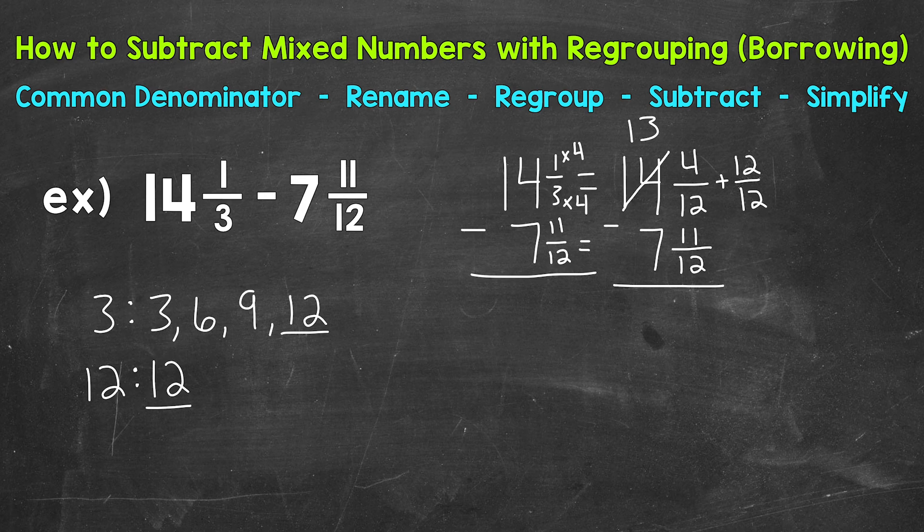12 over 12, if you have the same number on the top and bottom, same numerator and denominator, that equals one whole. Now I chose 12/12 so we would have a common denominator there, 12 and 12, and we would easily be able to add these fractions.